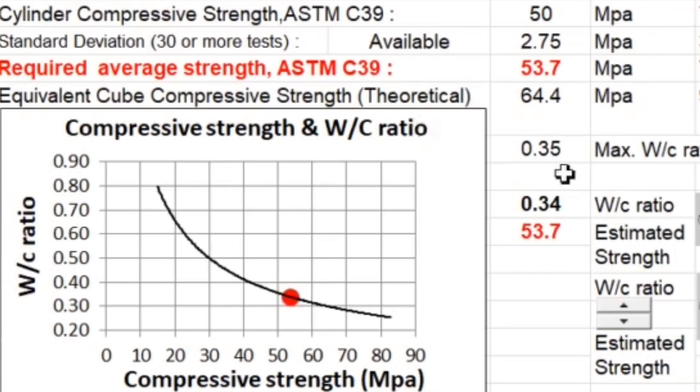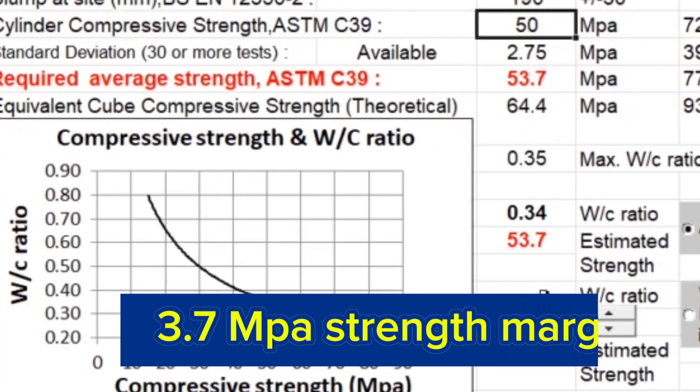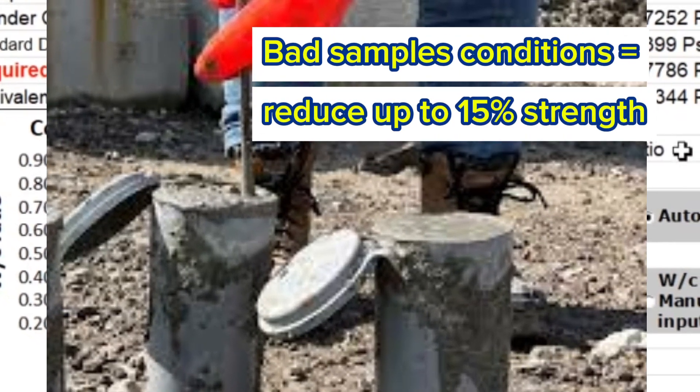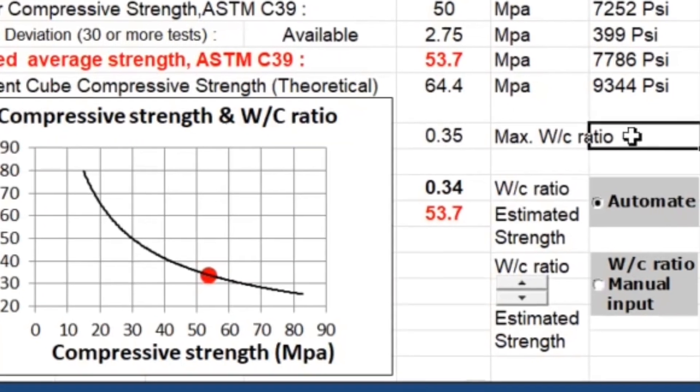But wait, you notice also that the margin now is very low, almost 4 MPa only. So if you are not confident with this due to uncontrolled bad site conditions, that could potentially reduce strength up to 15%, then use conservative strength margin.